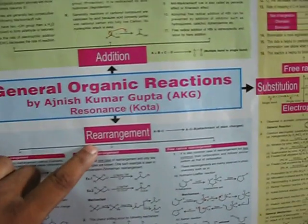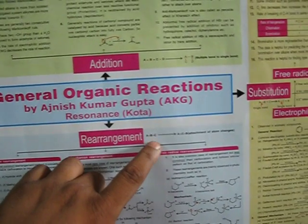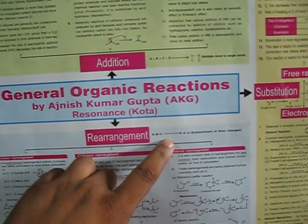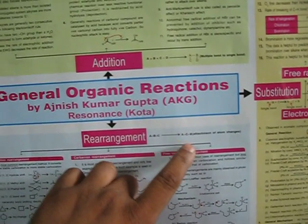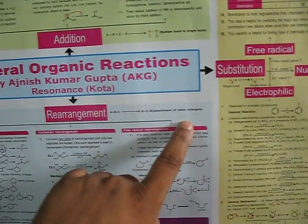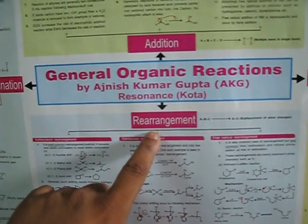In rearrangement reaction, that is A sigma bond B sigma bond C undergoes any reaction to give A sigma bond C sigma bond D. That is, if attachment of atoms are changed, then such reactions are called as rearrangement reactions.